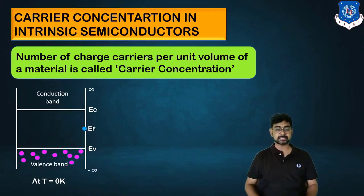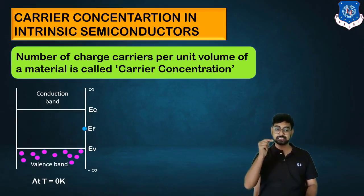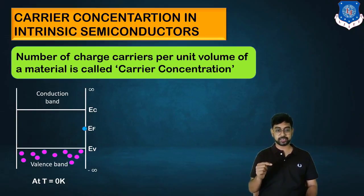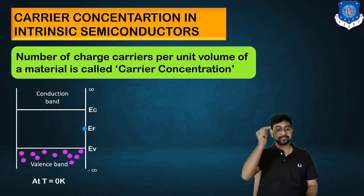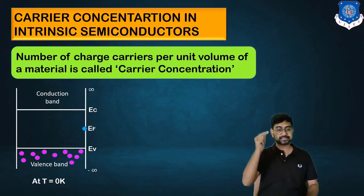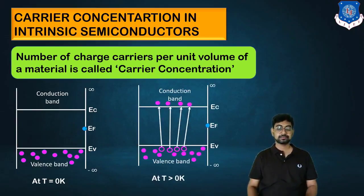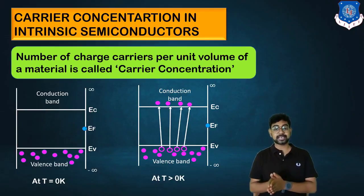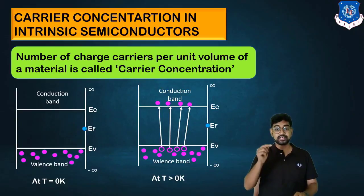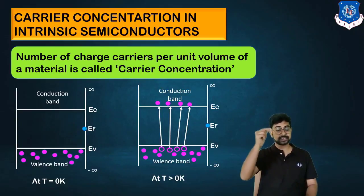What is notable in this image is the limits. The upper limit of the valence band is E_V, and the lower limit extends to minus infinity. Similarly for the conduction band, the bottom is E_C and the maximum is infinity. In the next diagram where T is greater than zero Kelvin, E_V and minus infinity remain for the valence band, and E_C to infinity for the conduction band.